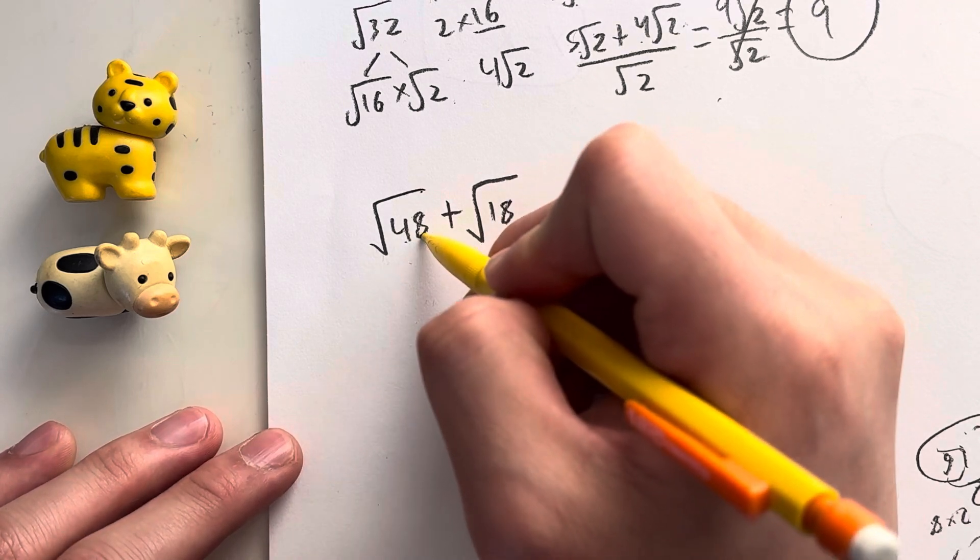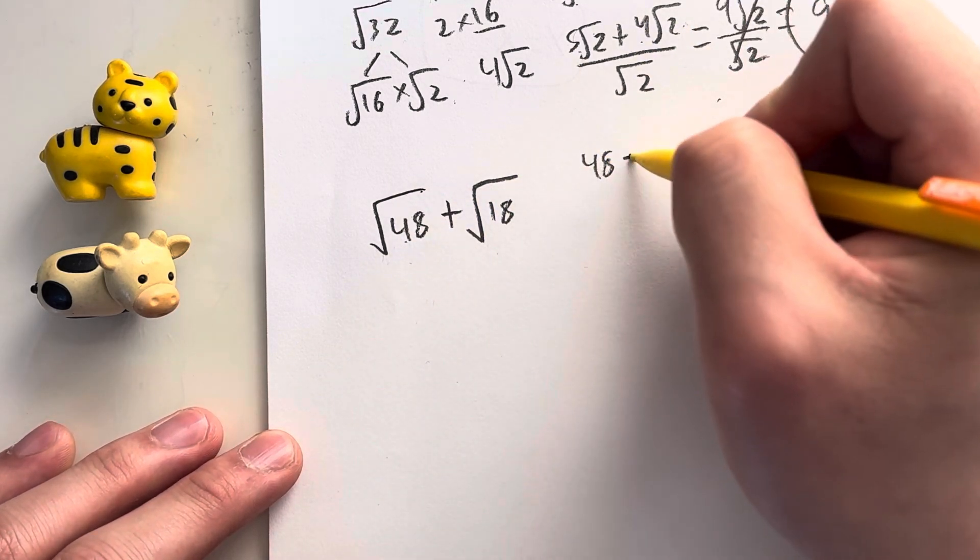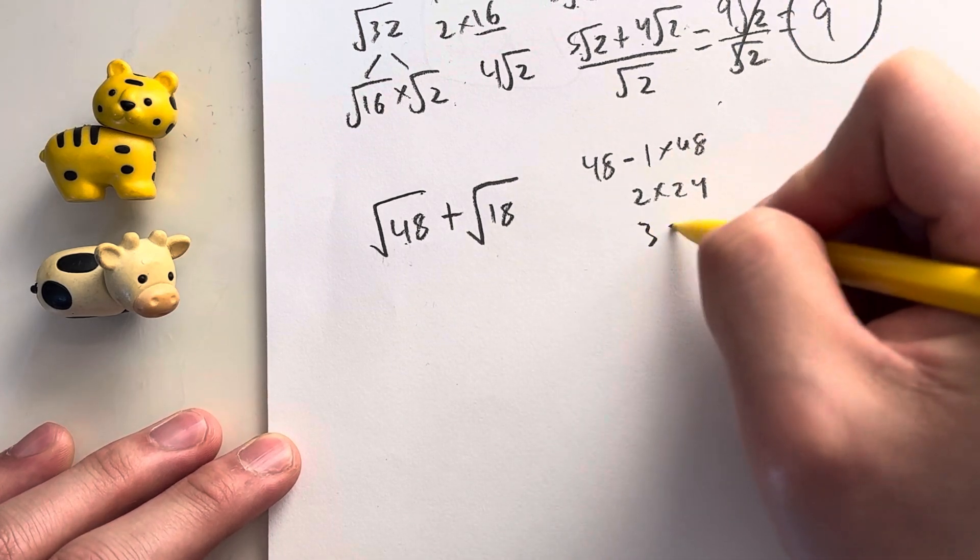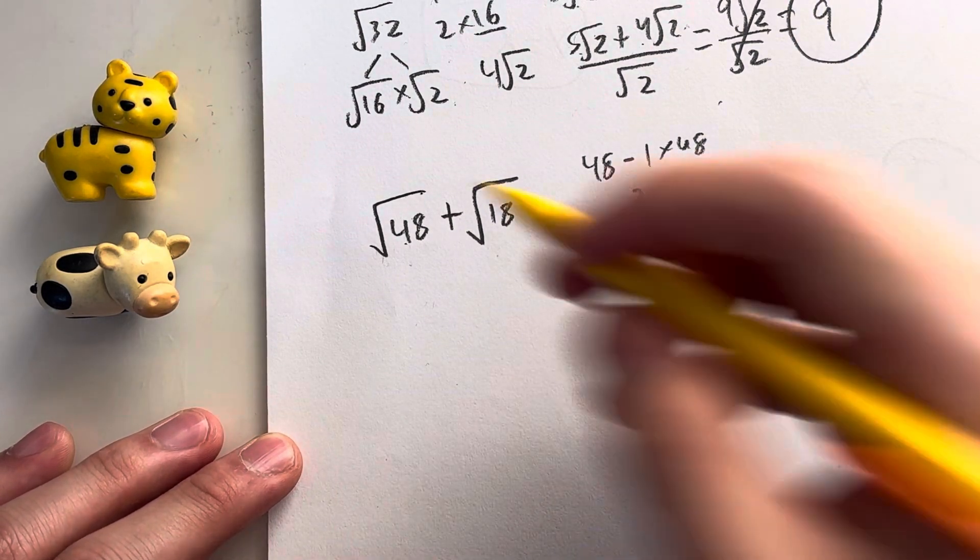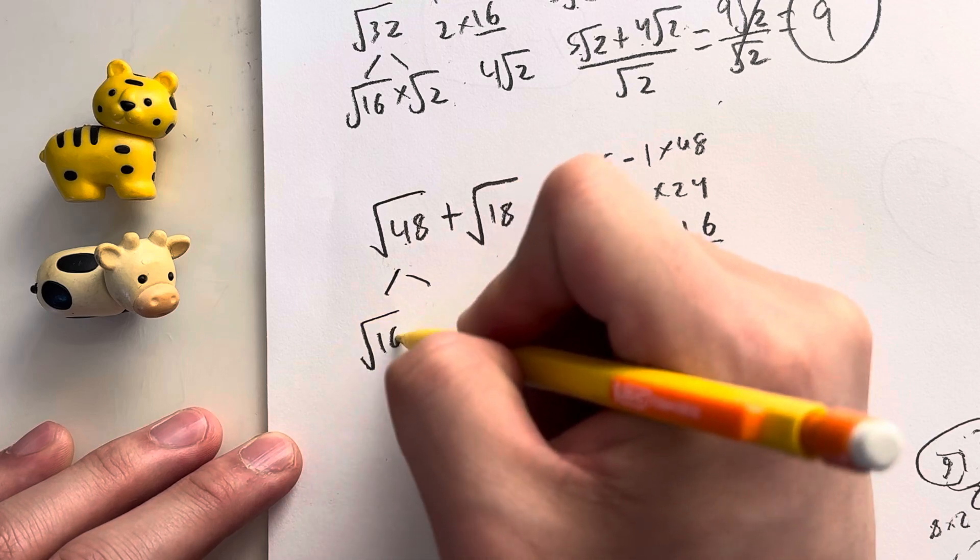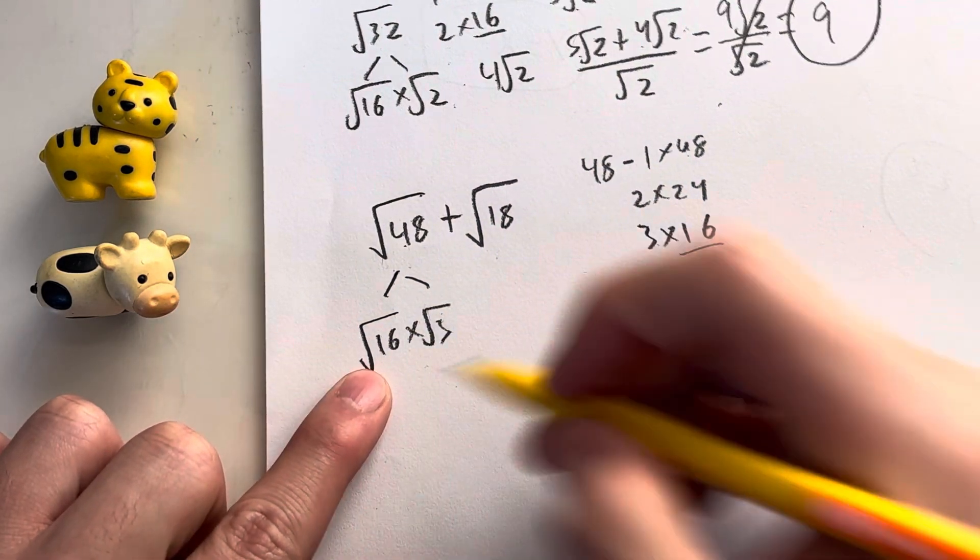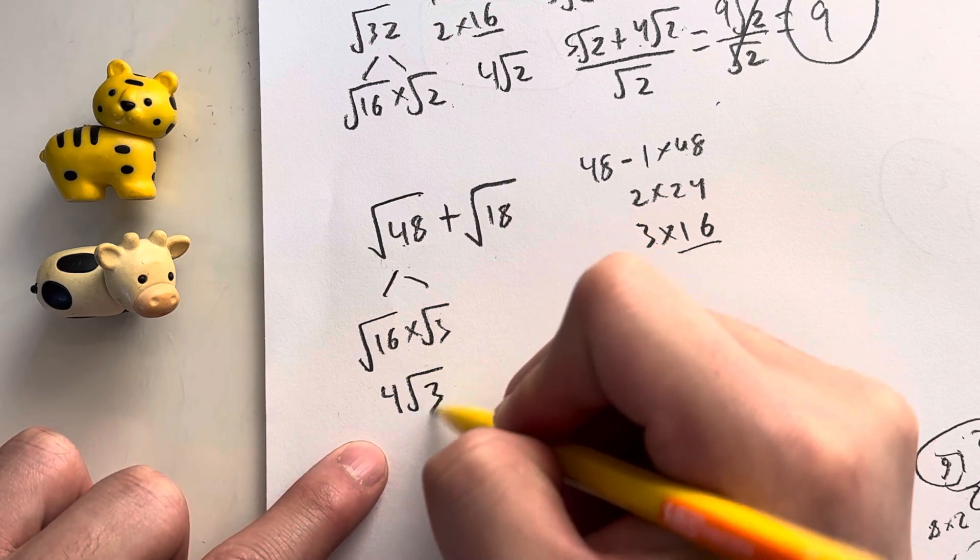Let's list out some factors for 48. That's going to be 48 is equal to 1 times 48, 2 times 24, 3 times 16. Oh, perfect. 16 is a perfect square. That's going to be equal to the square root of 16 times the square root of 3. And the square root of 16 is just equal to 4 root 3.